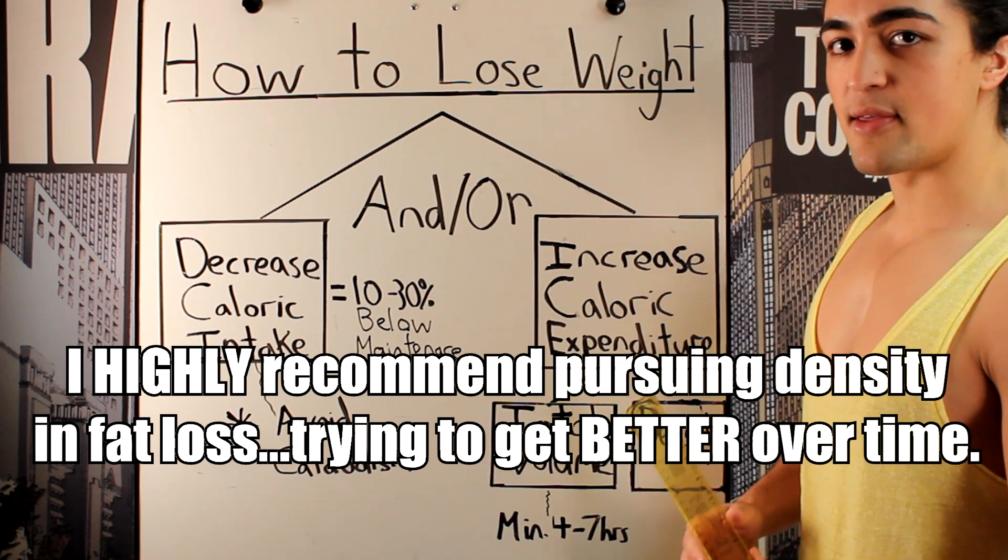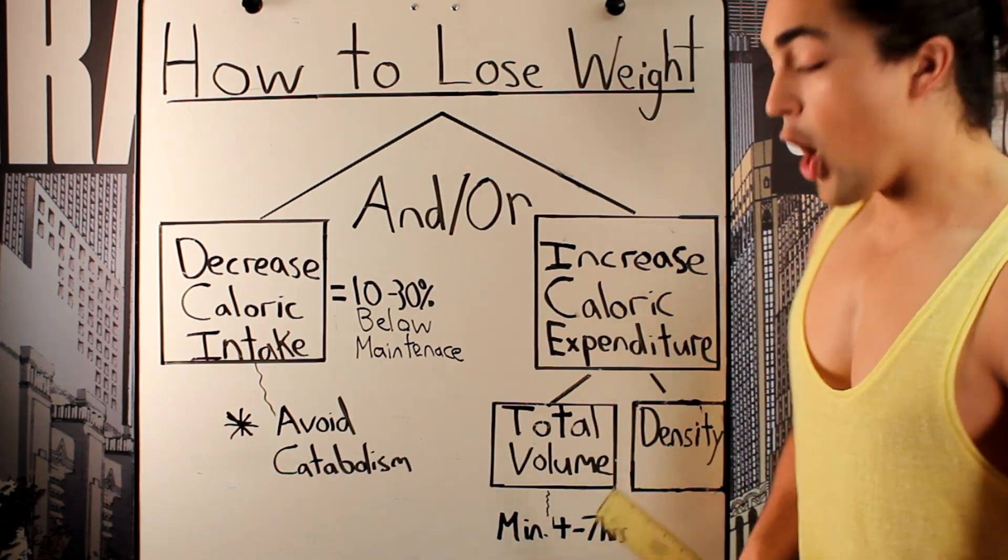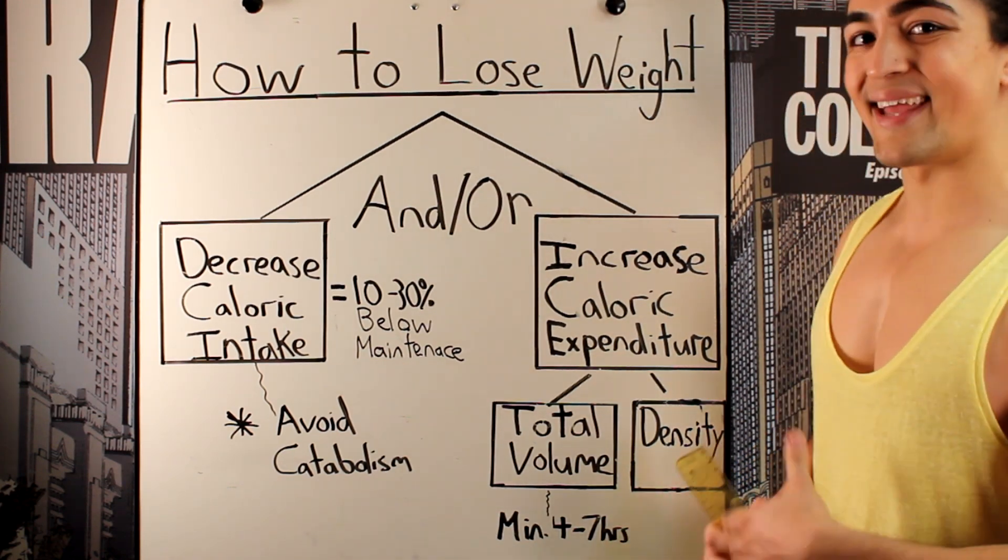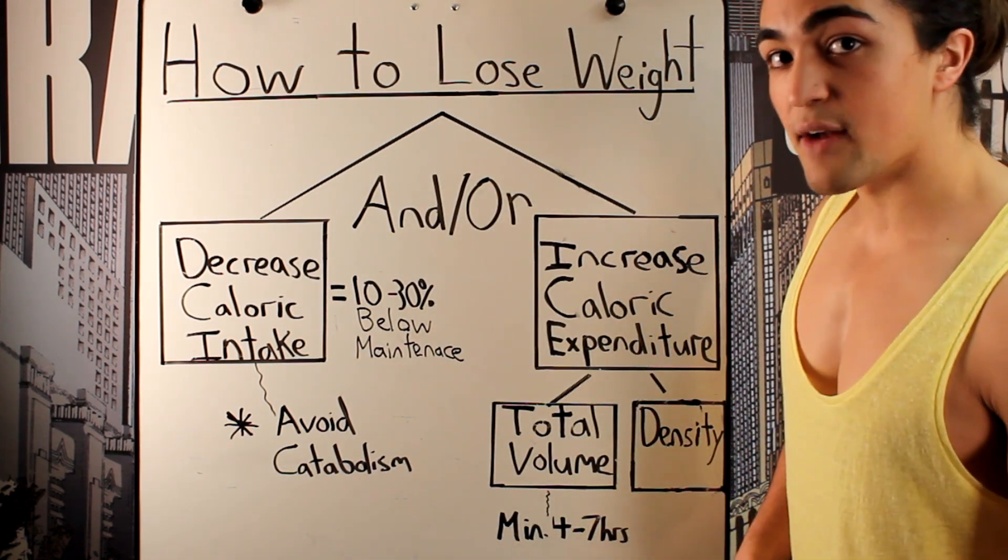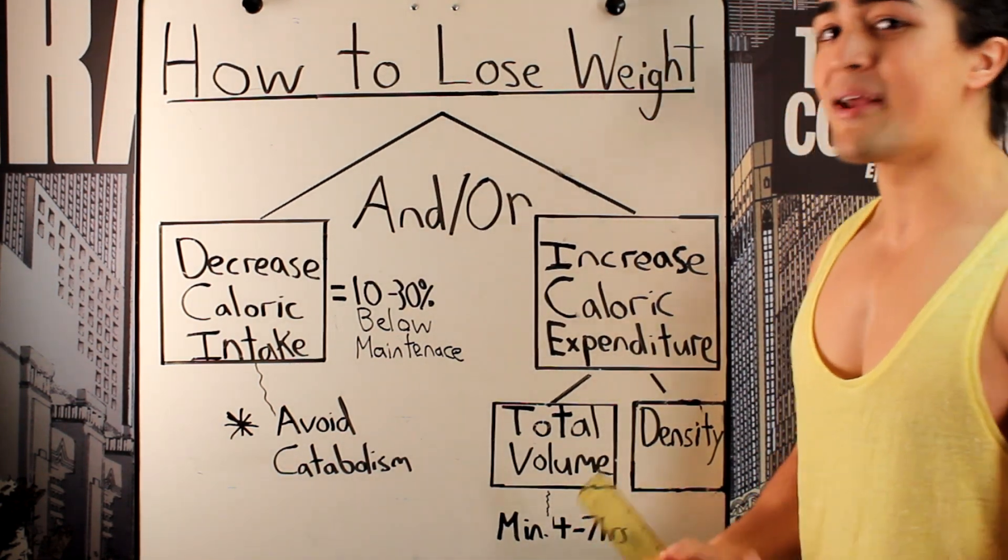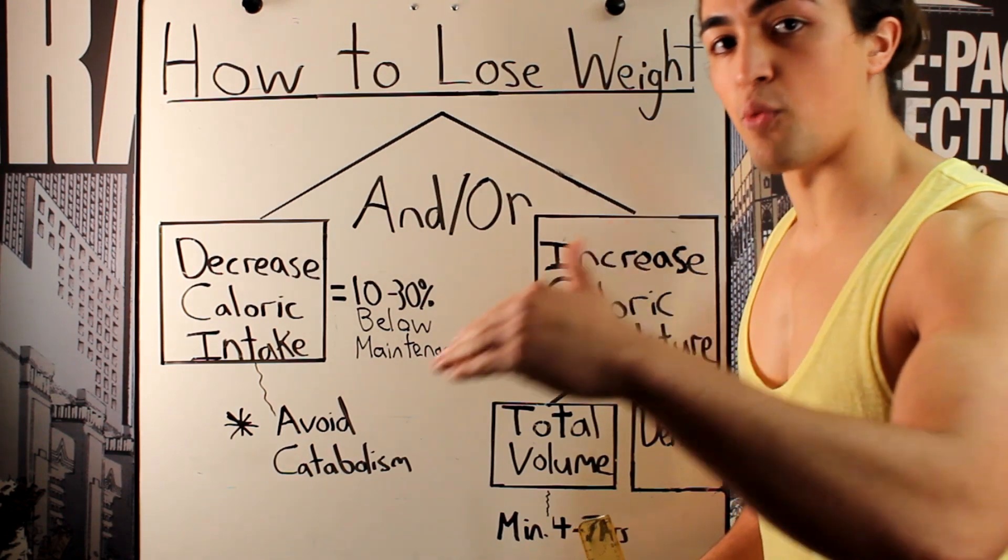So, you always want to be chasing performance. If you look under option B then, you can do a combination of both. Always trying to pursue progressive overload, getting better over time, lifting more weight, doing more work in less time, and then second of all, in addition to that, perhaps adding a little bit more cardiovascular work, maybe an additional training session as you continue to lose weight.